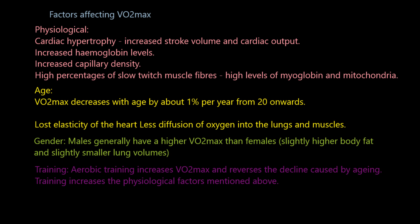Training is another factor. Any form of aerobic training will reverse the decline caused by aging. Going out for long distance runs, swims, bike rides — that is going to create cardiac hypertrophy, increase haemoglobin levels, increase capillary density, and increase the number of slow twitch fibres. The specific methods and training zones are covered in a follow-up video on training zones and how to improve and evaluate VO2max.